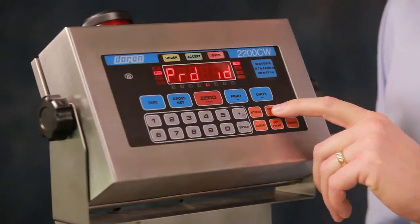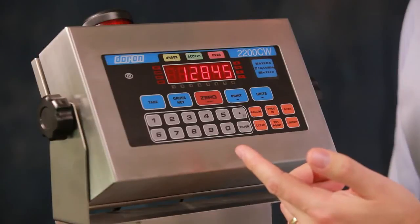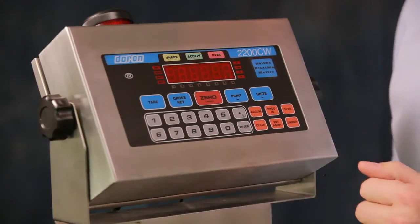The 250 product memory allows you to save not only the over, under, and tear tolerances, but also lets you save fields such as who the operator was, the scale and the location of the scale, and some product description as well.